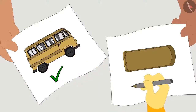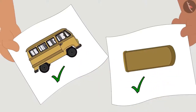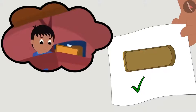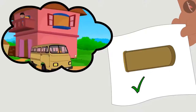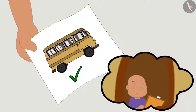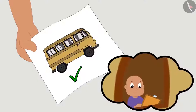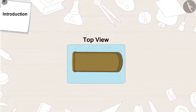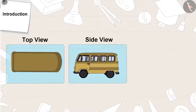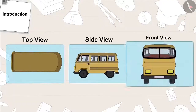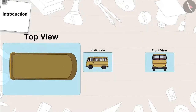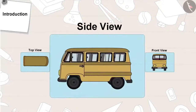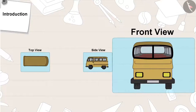In fact, the drawings of both Raju and Bablu are correct. Raju had drawn the top view of the bus, whereas Bablu saw the bus from the side while drawing it. All objects can be viewed from three different sides: from the above — that is top view — side view, and front view.